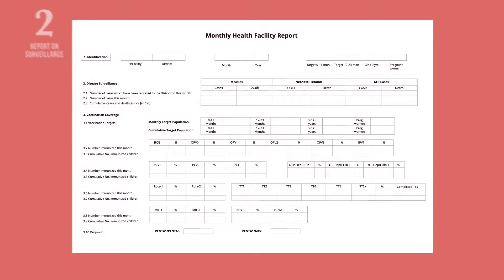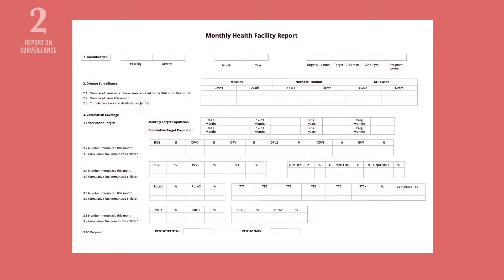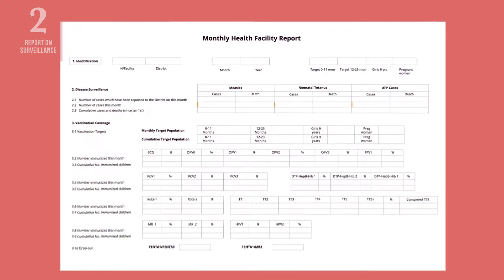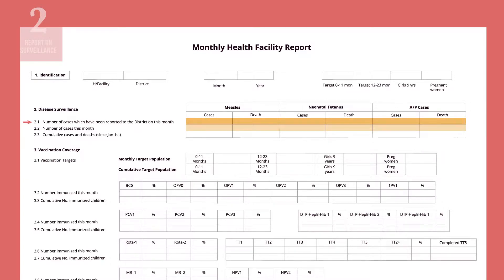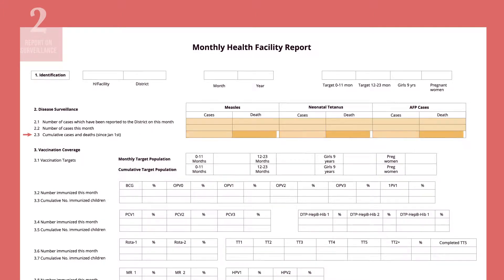For any diseases that are under surveillance, report the number of cases of disease and number of deaths this month. Also, write down how many of these have been reported to the district, since some diseases should be immediately reported to the district level. Finally, record the cumulative number of cases investigated and confirmed, and cases of deaths since the beginning of the year.